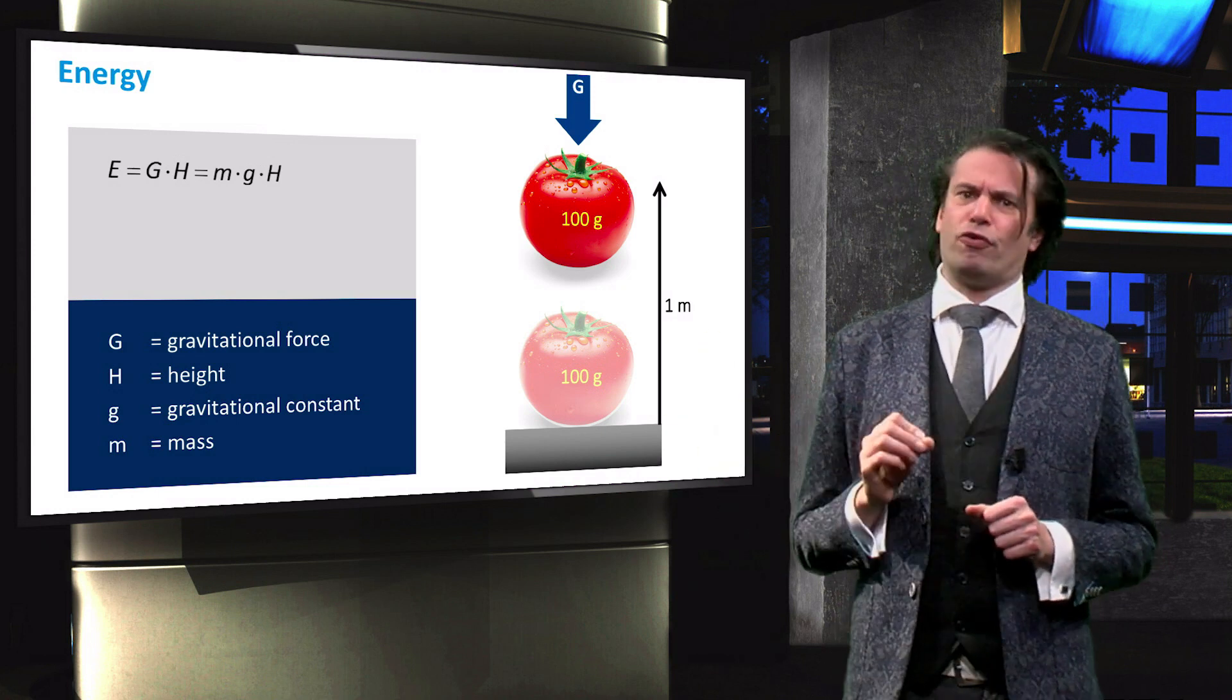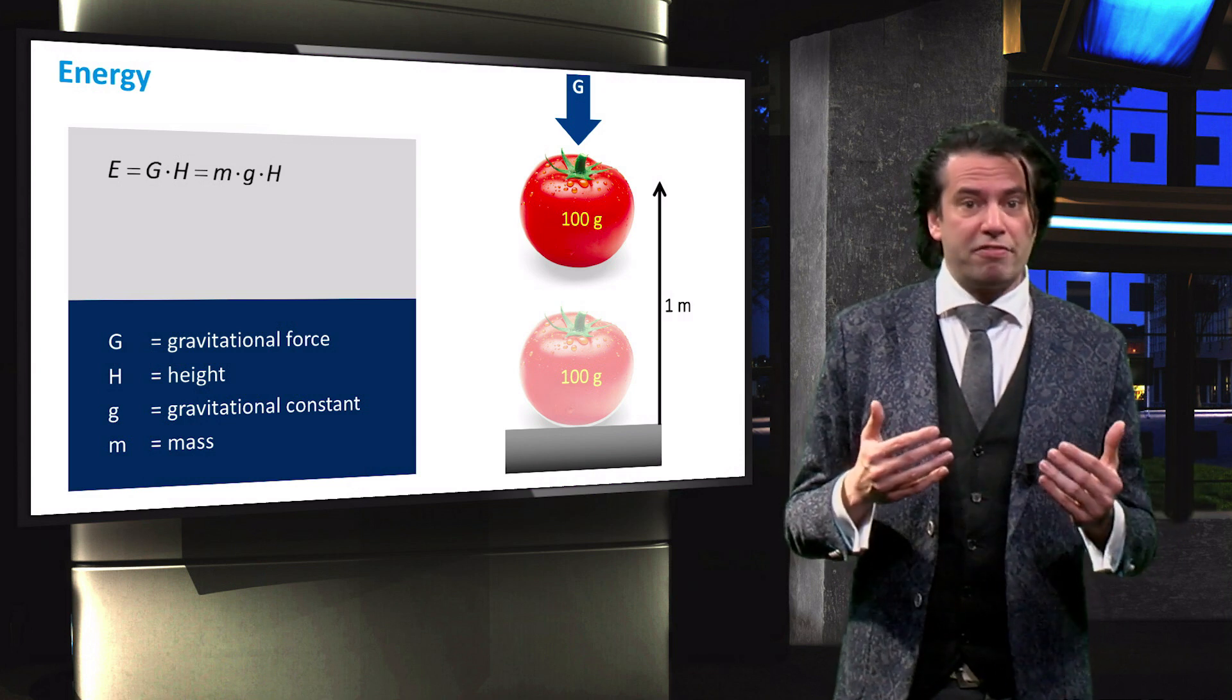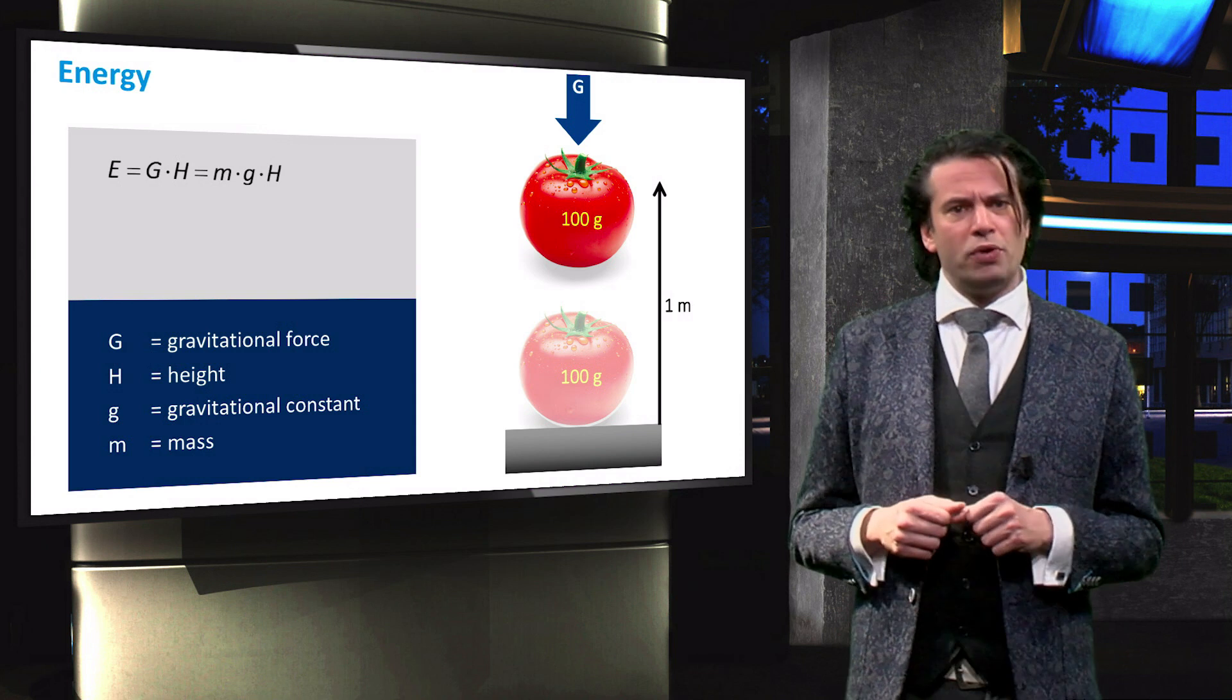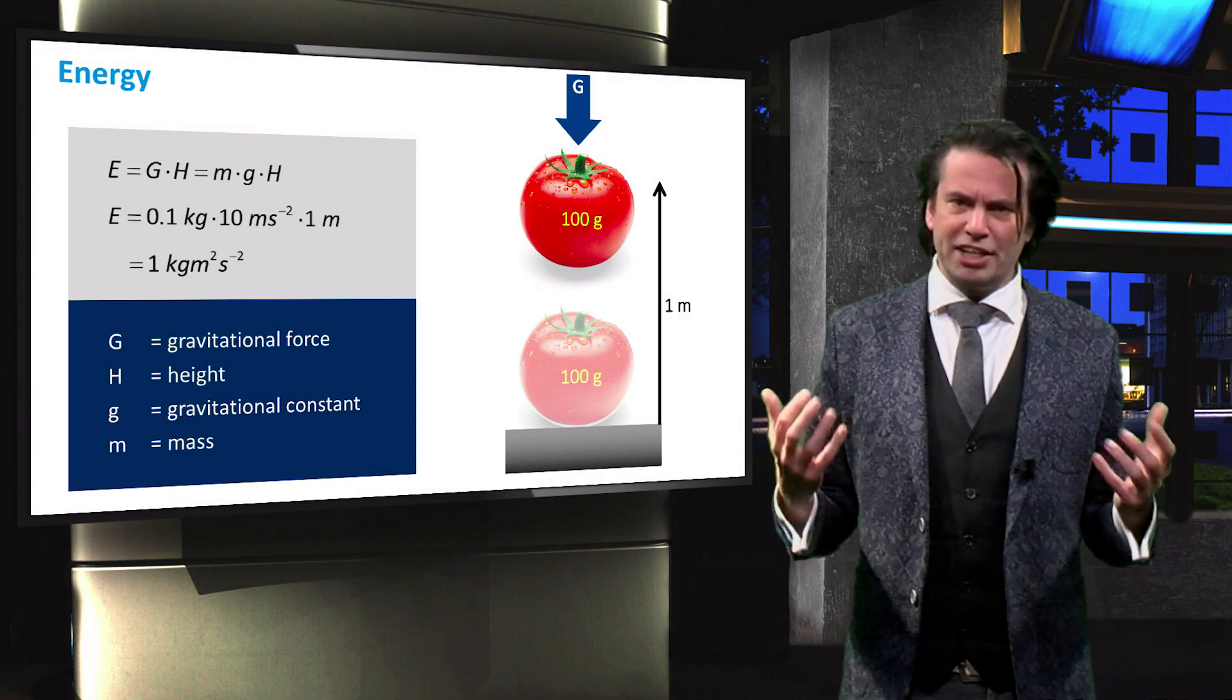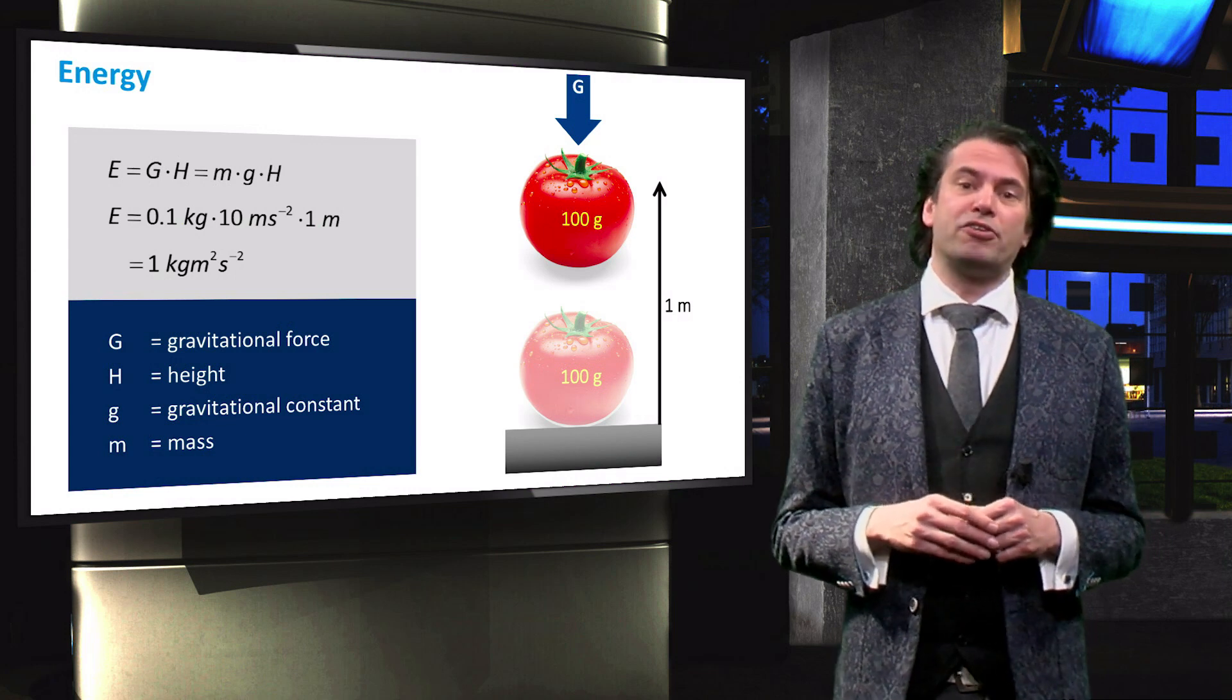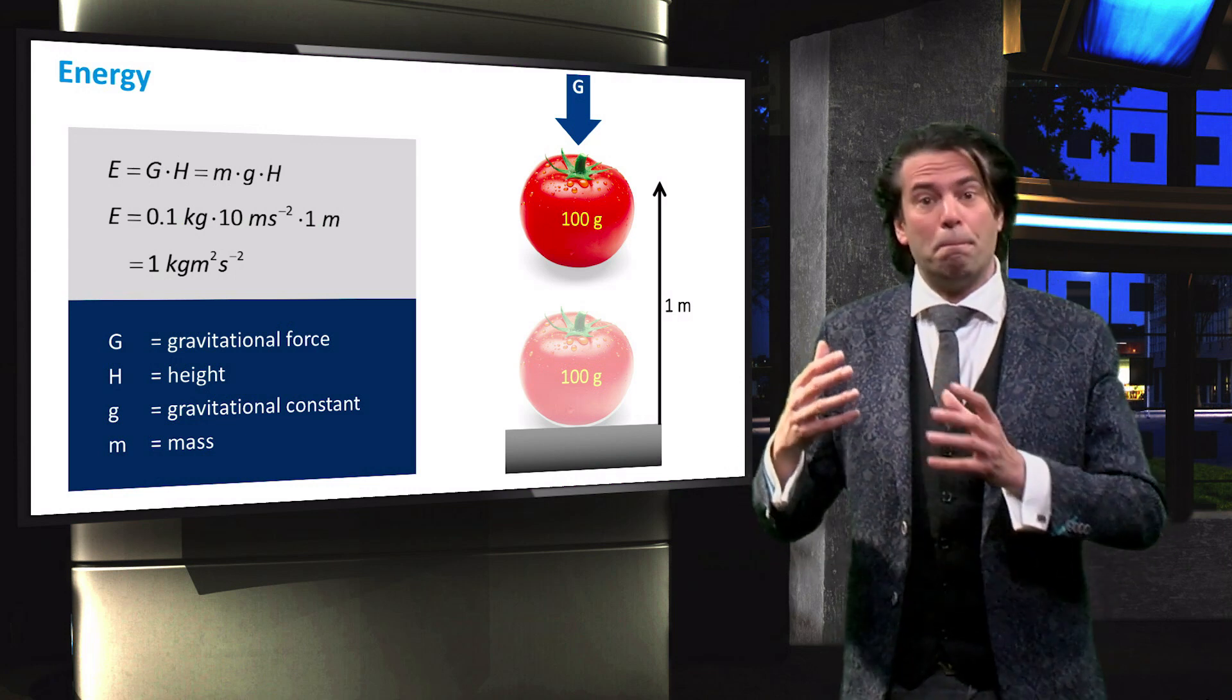The gravitational force near the surface of the earth is equal to the mass of the tomato times the gravitational acceleration, which is denoted by the lowercase g. The amount of energy required to lift the tomato is therefore equal to 1 kilogram times meter squared per second squared.